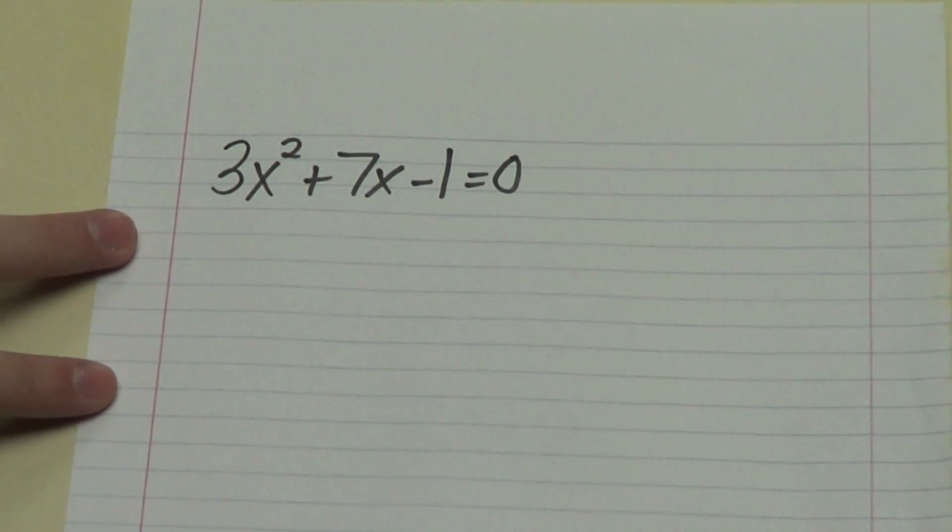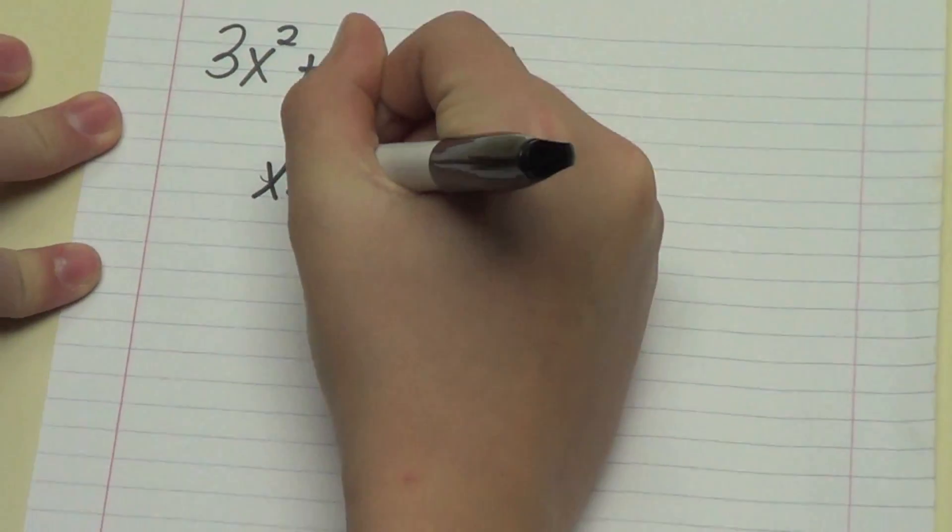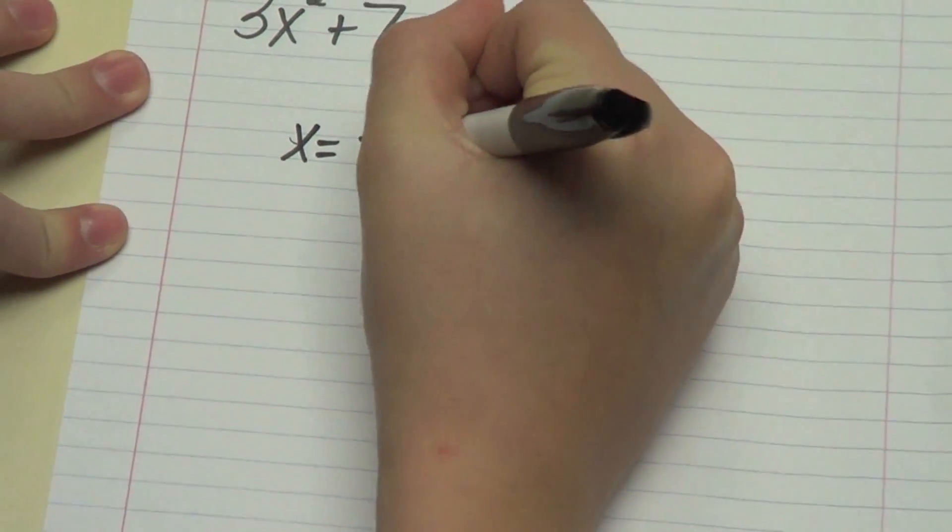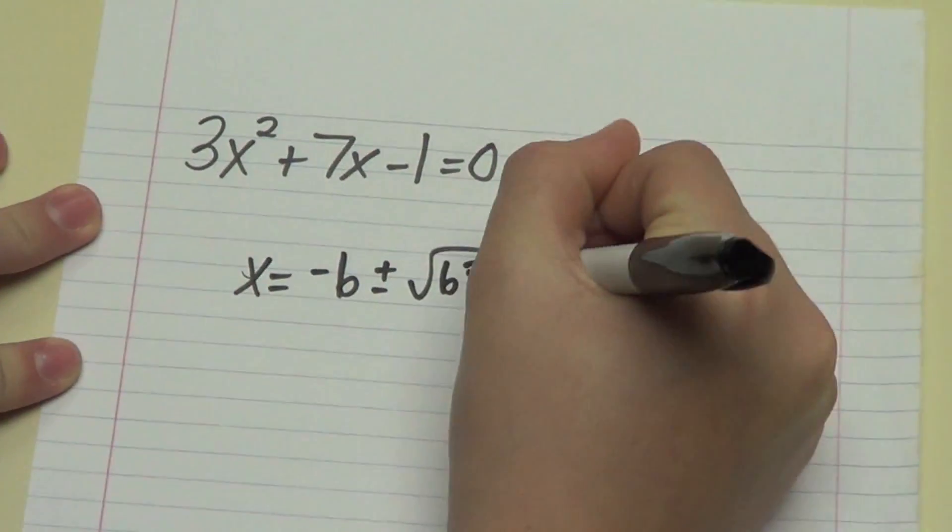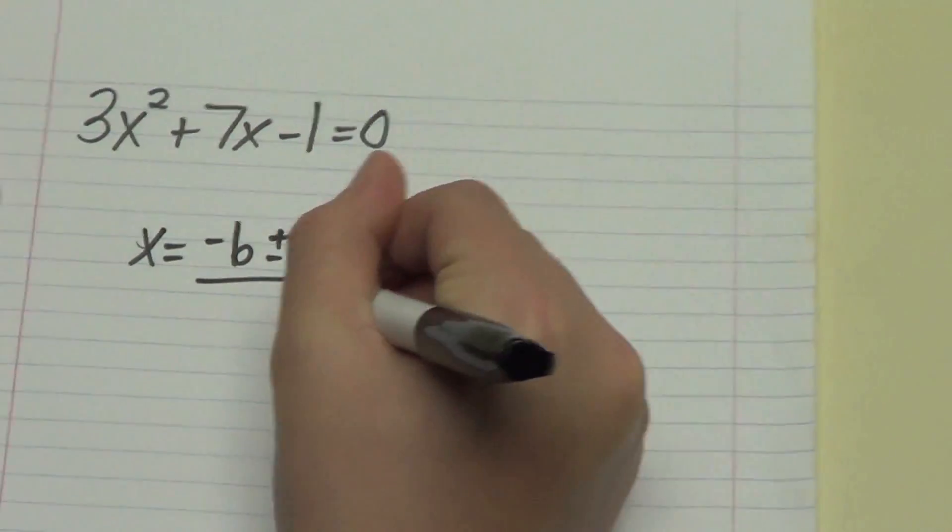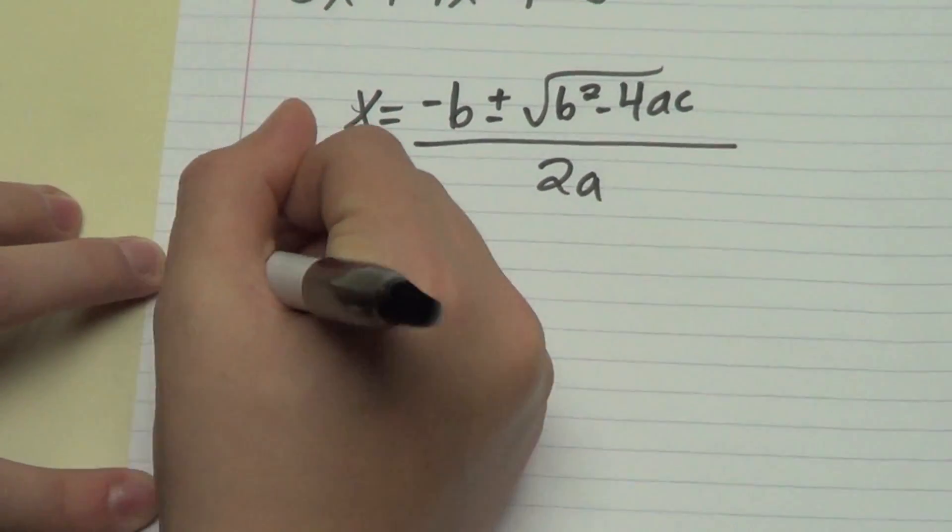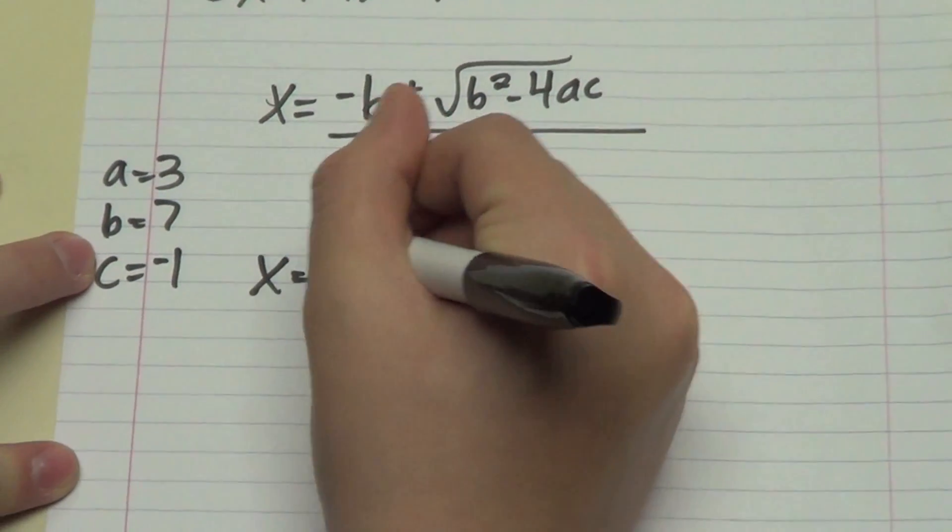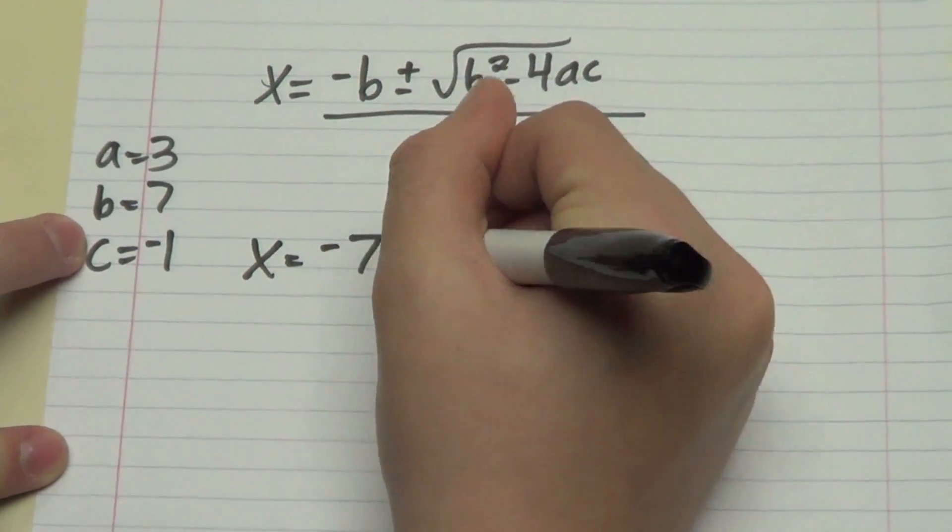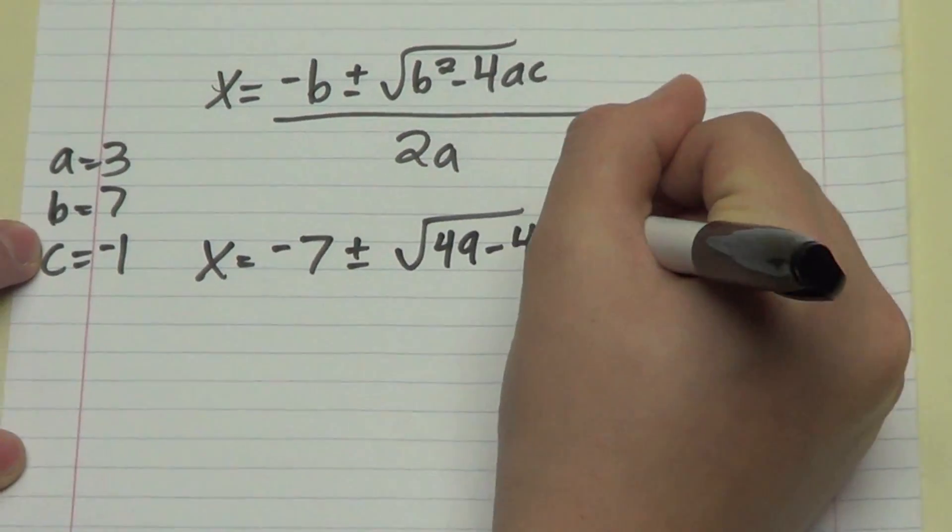Now why don't you try this one? Okay. So the quadratic formula is x equals negative b plus or minus rad b squared minus 4ac all over 2a. a equals 3, b equals 7, and c equals negative 1. So x equals negative 7 plus or minus rad 49 minus 4 times negative 3 all over 2 times 3.